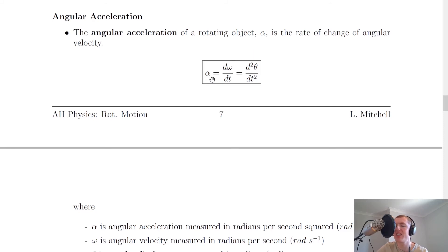It says that angular acceleration alpha equals dω/dt, the first derivative or differential of omega the angular velocity, which equals d²θ/dt², the second differential of the angular displacement.